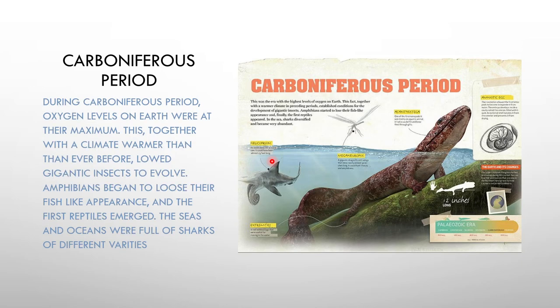Moving on to the Carboniferous period — this was when the Earth was at its hottest, oxygen levels were the highest, and gigantic insects evolved. You can see this dragonfly, Meganeuropsis, which was 72 cm long — more than 2 feet. Amphibians were becoming less fish-like and starting to look like lizards, such as Acanthostega, which was about 12 inches — 30 cm long.